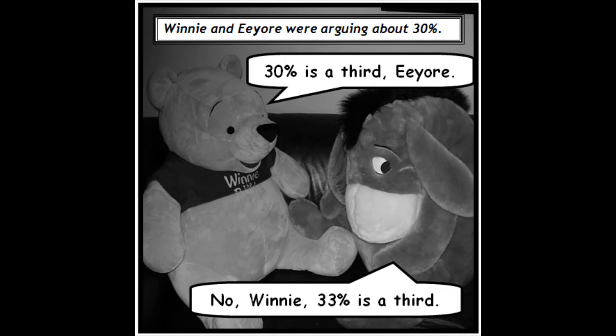Winnie and Eeyore were arguing about 30%. 30% is a third Eeyore. No, Winnie, 33% is a third.